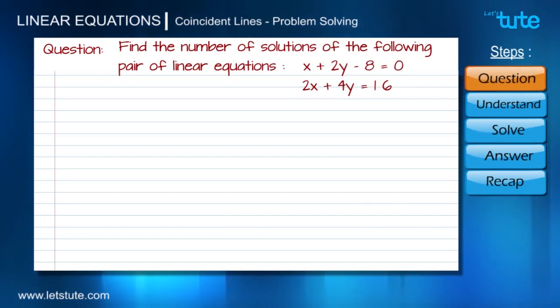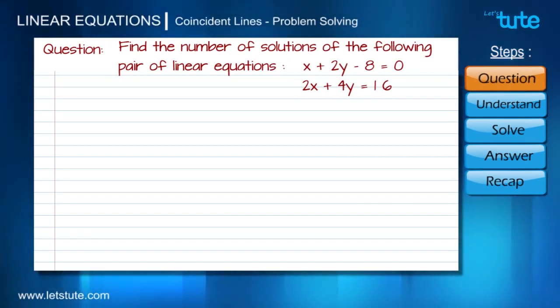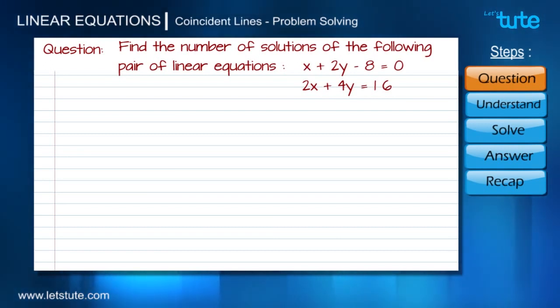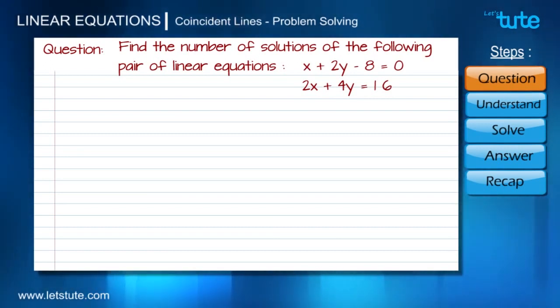Here is the question. It says: find the number of solutions of the following pair of linear equations — x plus 2y minus 8 equals 0, and 2x plus 4y equals 16.